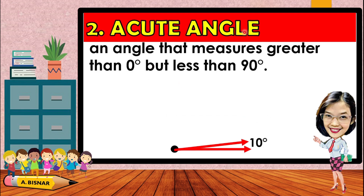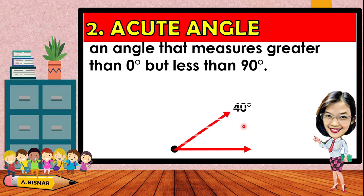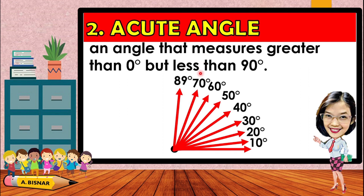The next one is the acute angle. It is an angle that measures greater than zero degrees but less than 90 degrees. For example, a 10-degree angle has a small opening. As the degrees increase — 20, 30 degrees — the opening gets larger. An acute angle must be less than 90 degrees, so angles from just above 0 up to 89 degrees are called acute angles.